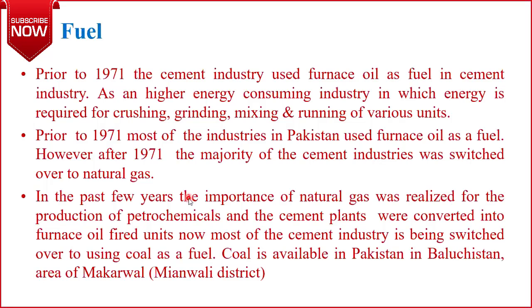We use a process of calcination to produce cement — heating at very high temperature in the absence of air or oxygen. For such high temperatures in a reactor, we require fuel. The fuel burns, producing flue gases at very high temperature with very high energy, and we transfer the energy of these flue gases into the reactants, which then react at high temperature to produce cement. The fuel initially used in the cement industry was furnace oil.